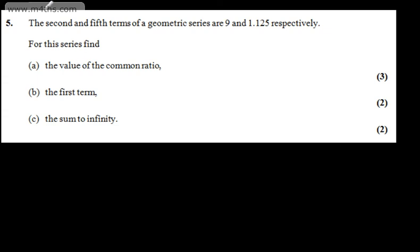This is question number 5. We're told the second and fifth terms of the geometric series are 9 and 1.125 respectively. For this series, find A for three marks, the value of the common ratio, B for two marks the first term, and C for two marks the sum to infinity.